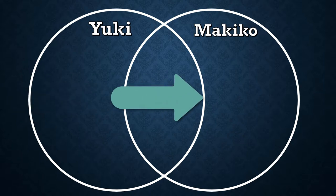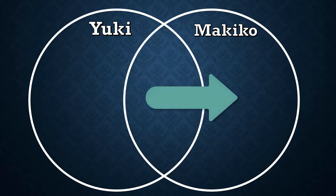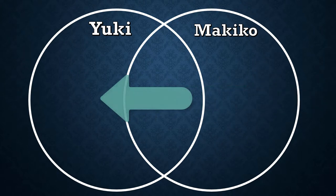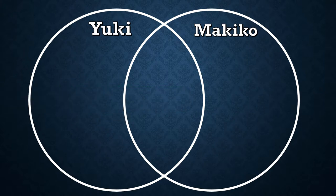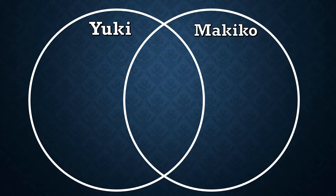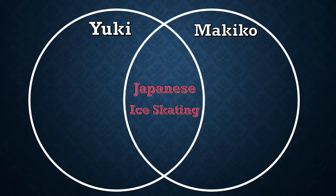To review: on the right side, we list the things that make Makiko different from Yuki. On the left, we list the things that make Yuki different from Makiko. And in the middle, we list the things that they have in common or are the same about them. Some things that Makiko and Yuki have in common is that they are both Japanese and like ice skating, so I would write these things here in the middle.